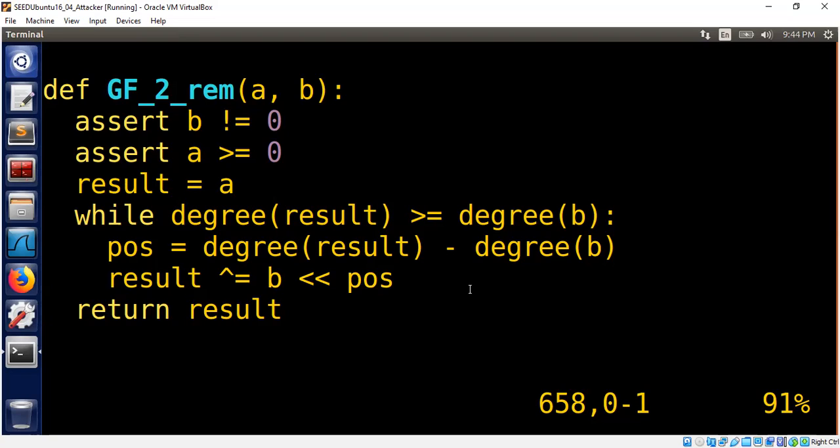The key is that your B is fixed. B doesn't change. Your result, which is what I mentioned, the new A, is the one that is updated based on the old result XOR it with how many positions B changed, depending on the difference in the degree. And you are using the left shift operator to simulate multiply by x, multiply by x² and so on.